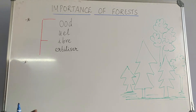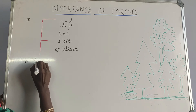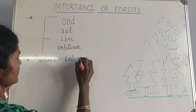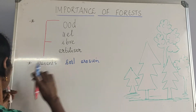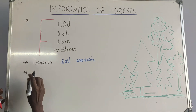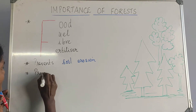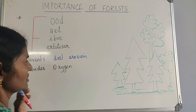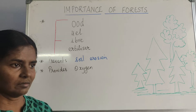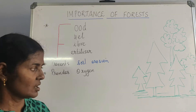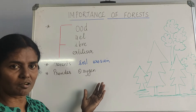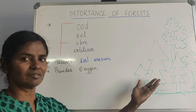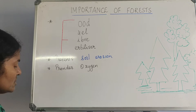Besides forest products, what else does the forest do? It prevents soil erosion. The next important thing is it provides oxygen. As we hear about and experience the coronavirus situation everywhere, there is so much demand for oxygen and people pay thousands of rupees for it. But here are these natural forests, these trees, which provide us with oxygen.